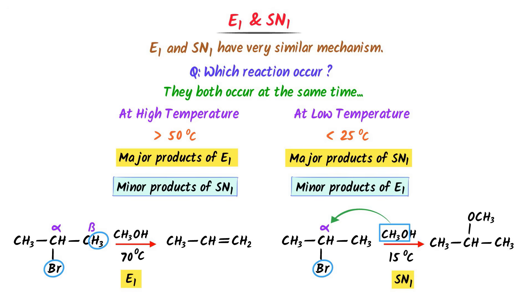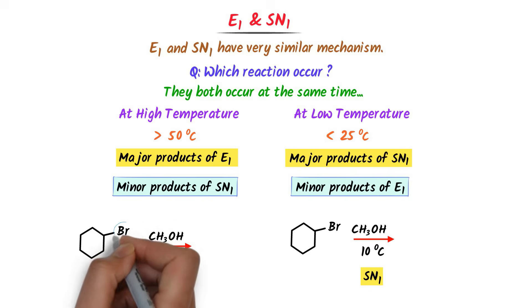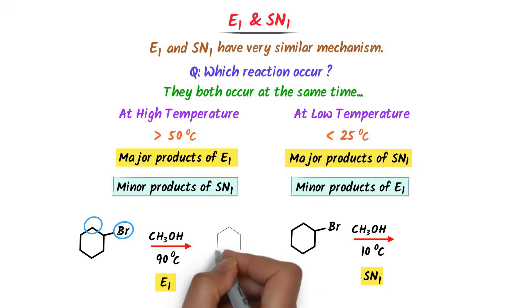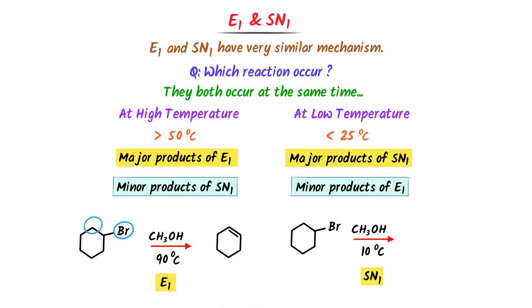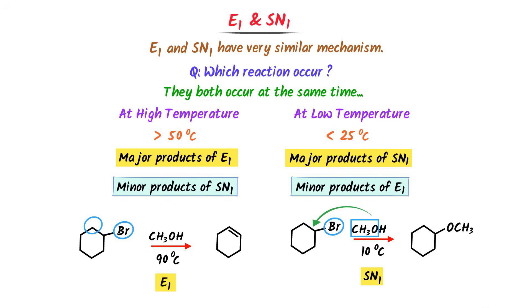Consider another example. We can see this is an E1 reaction and this is an SN1 reaction. For E1 elimination: remove the halogen from the alpha carbon, remove the beta hydrogen, and form a double bond — we get cyclohexene. For SN1 substitution: remove halogen from the alpha carbon and add the nucleophile CH3O of the base to the alpha carbon. Using these tricks, we can solve any question of E1 and SN1 reaction.